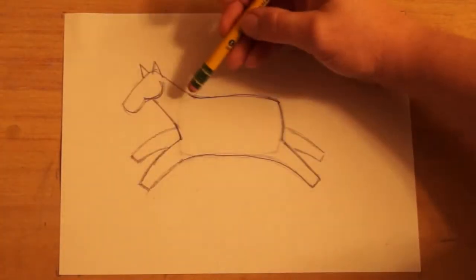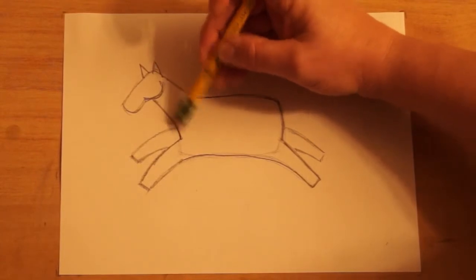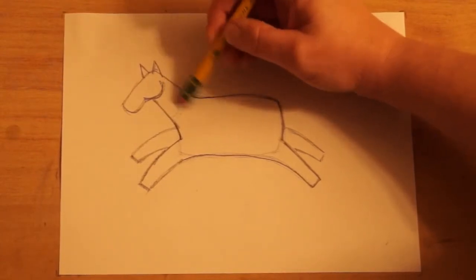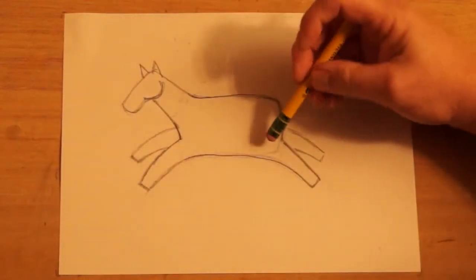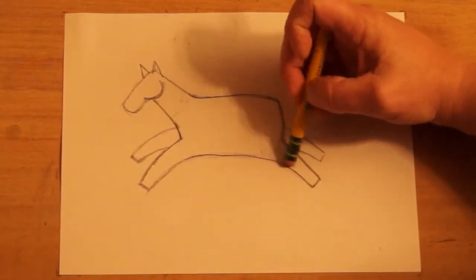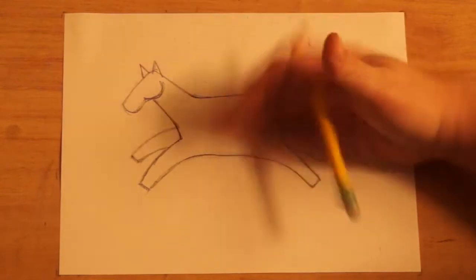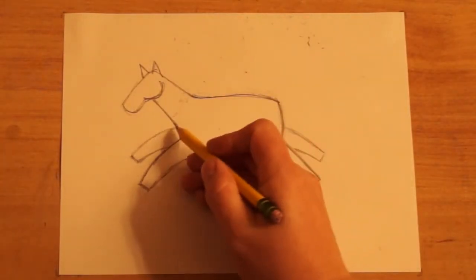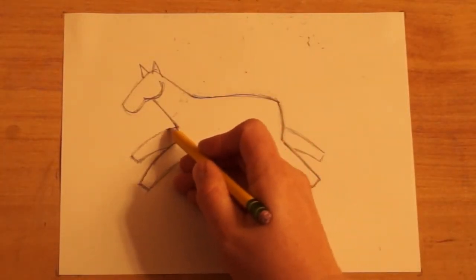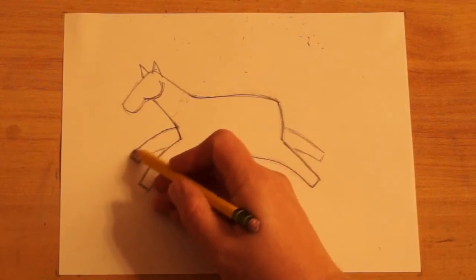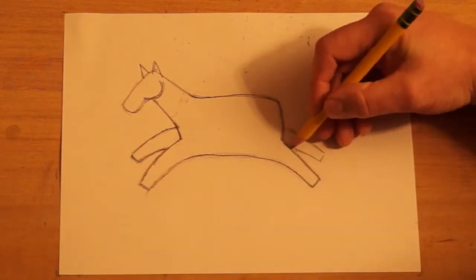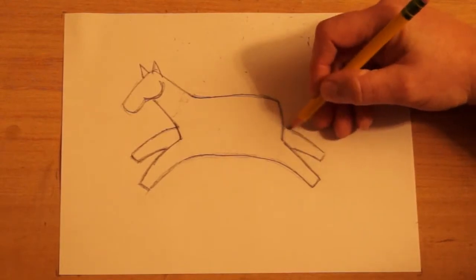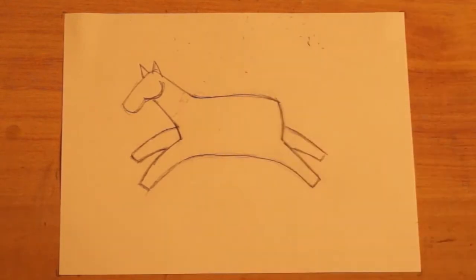Now I want to clean up, get rid of some of these lines that I don't need. So like here inside the neck, inside the front leg here, and inside the back leg right here. I want to make these other two legs darker around the outline, the outside edge of the leg.